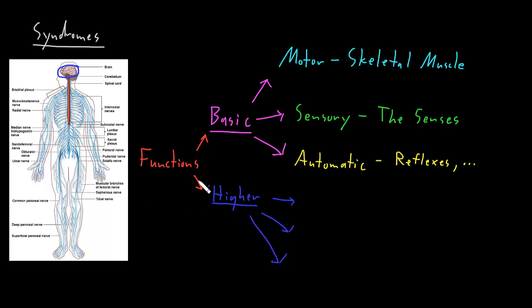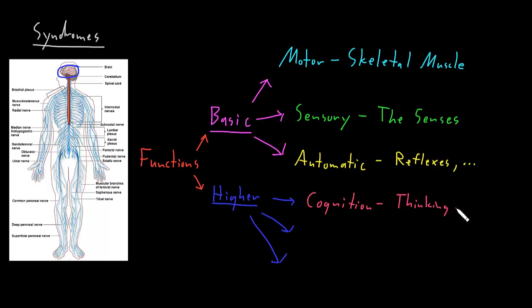The first big category of higher functions I call cognition. People use this word in a number of different ways, which can get confusing, but I like to think of it as the thinking functions of the brain. Under cognition we can also include learning, memory, language, and the executive functions, which involve creating goals and organizing behavior to achieve those goals.